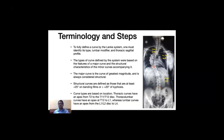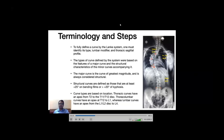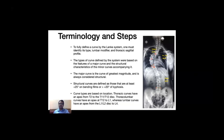The second step is to understand whether these minor curves are structural or not, and this depends on their flexibility on a side-bending radiograph. We essentially do a side bend and see the magnitude of the curve. If the residual curve angle on side bending is still more than 25 degrees, then it is considered a structural curve on the coronal plane.